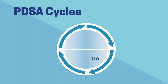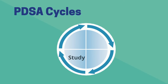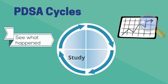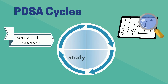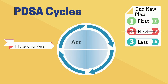Next is do. The team carries out the plan to address the changes. Then it's study. The team studies what happened by using the measures identified during the planning phase to assess and track progress. Finally, it's act. The team makes changes to the next iteration of the plan to improve implementation.